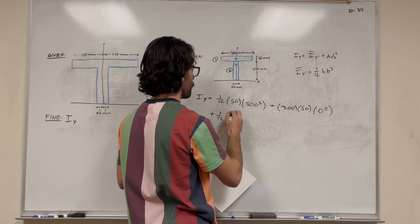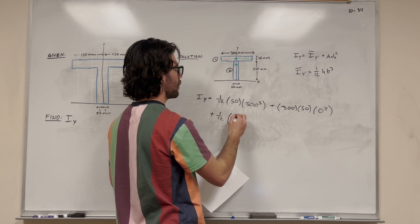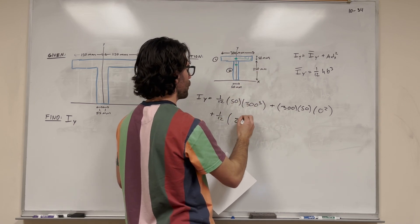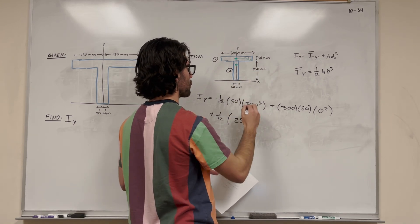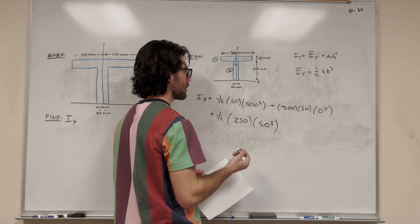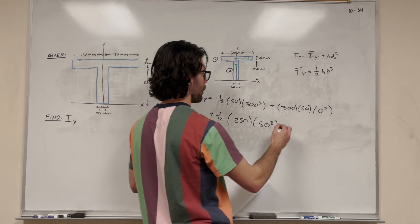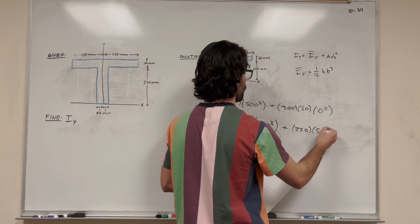which is going to be 1/12th times this base. So this base is 50—or I mean its height, which is 250—times its base, which is 50 cubed. Then we're going to do the same thing, so add its area. Its area is 250 times 50.